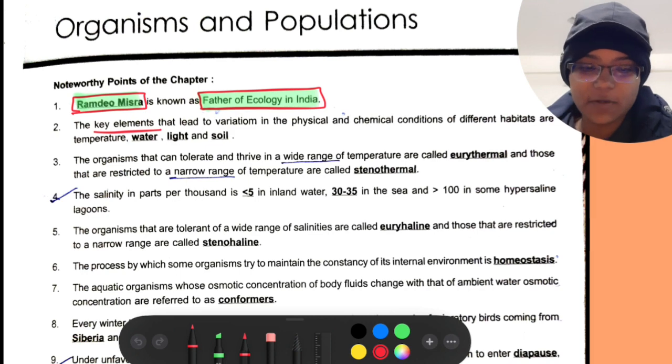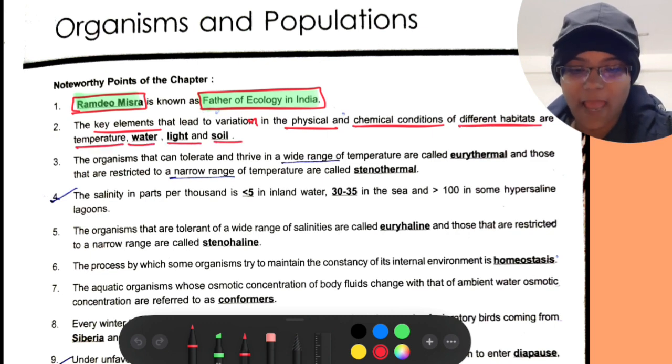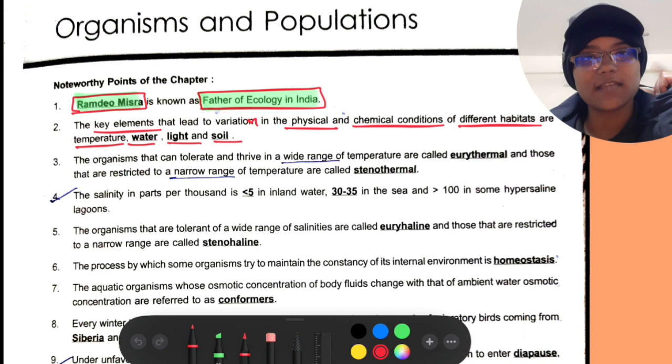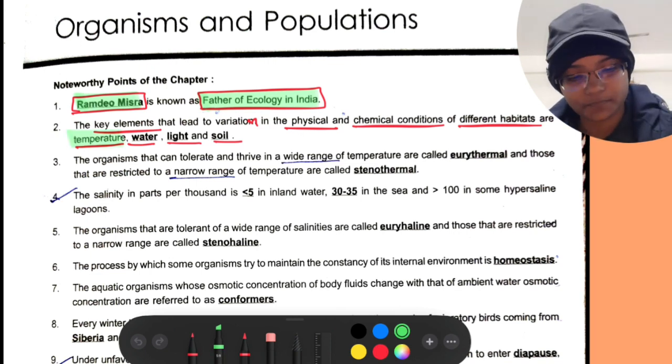The key elements that lead to variation in the physical and chemical conditions of different habitats are temperature, water, light and soil.